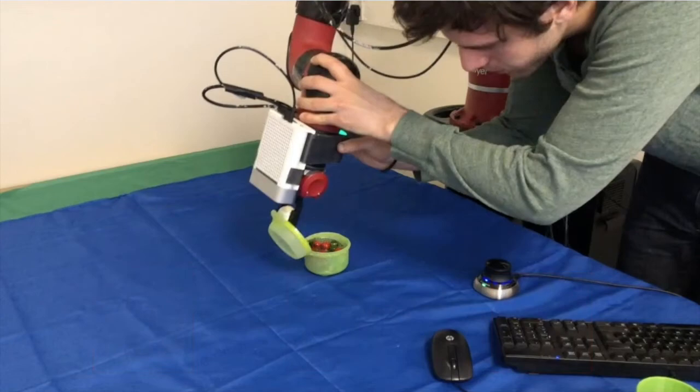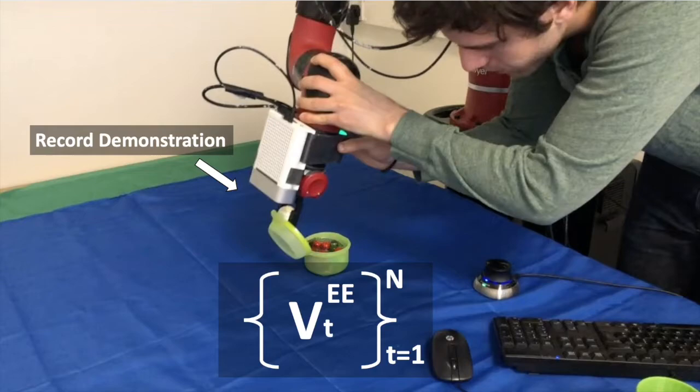When we do the kinesthetic demonstration, we record the end effector velocities in the end effector frame and store them for use during deployment.